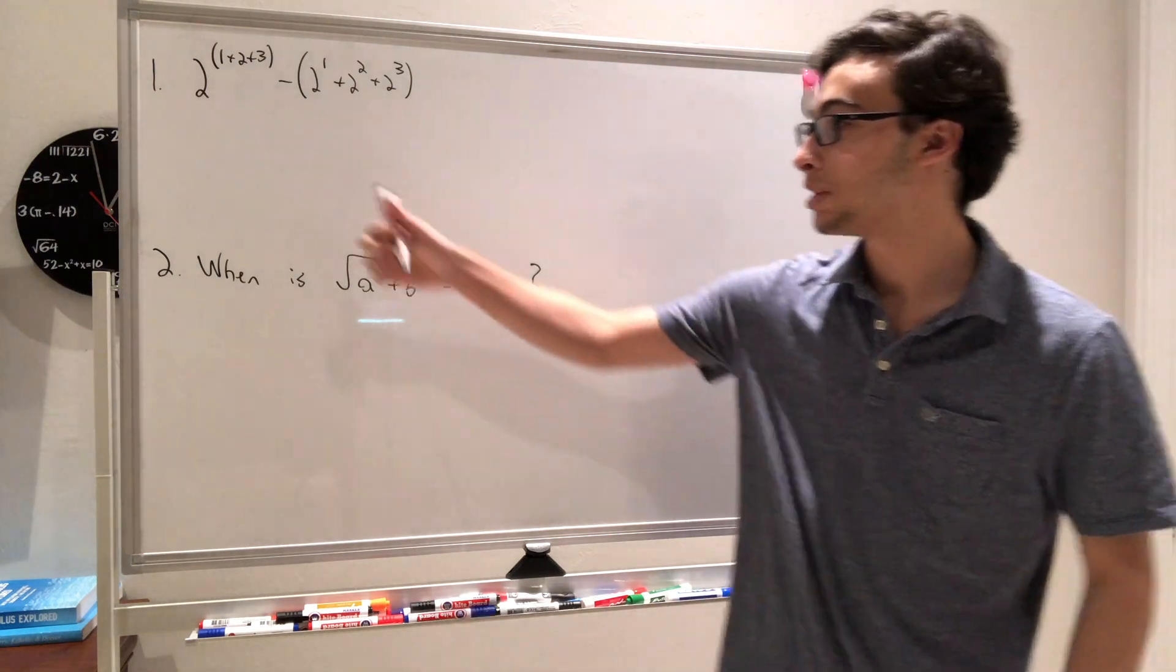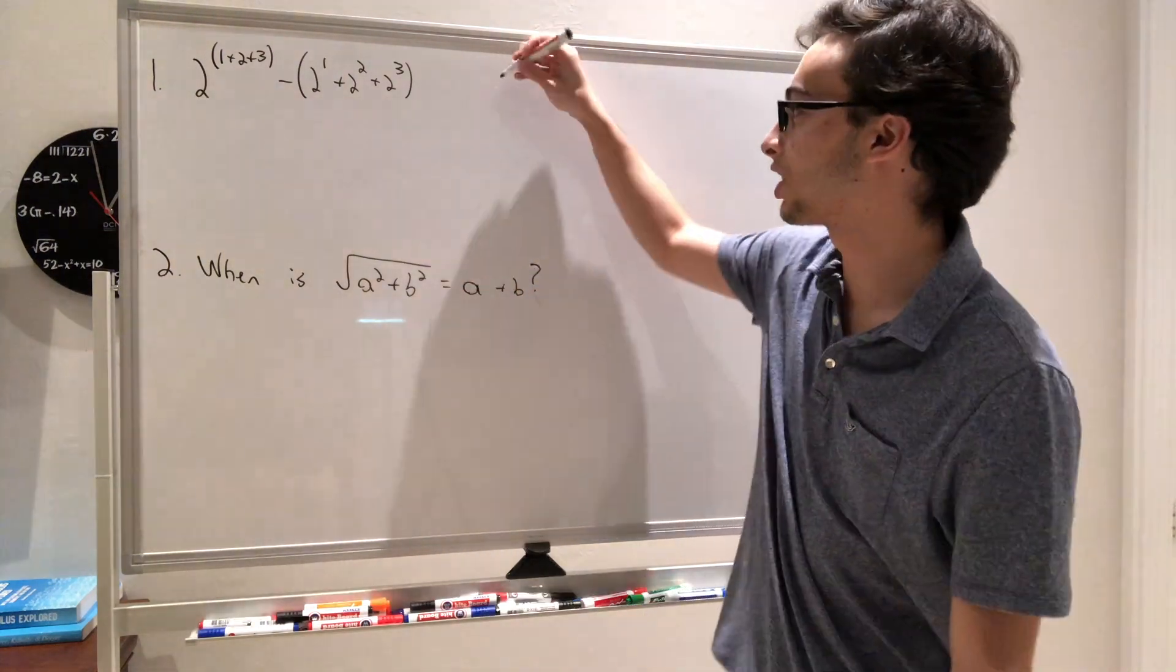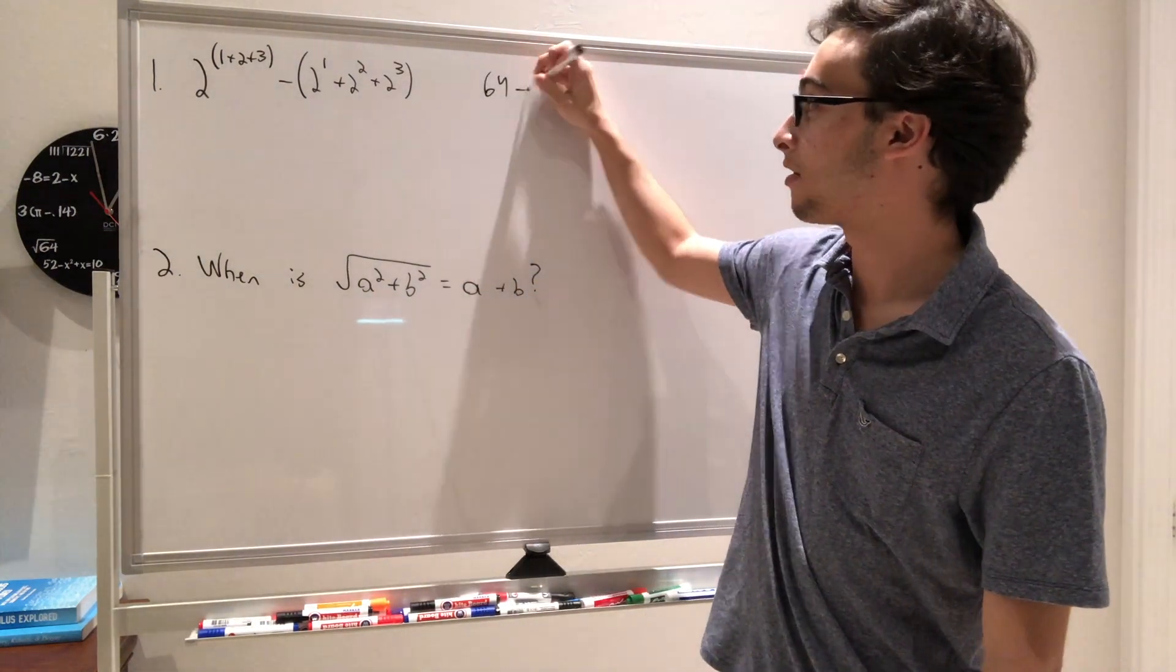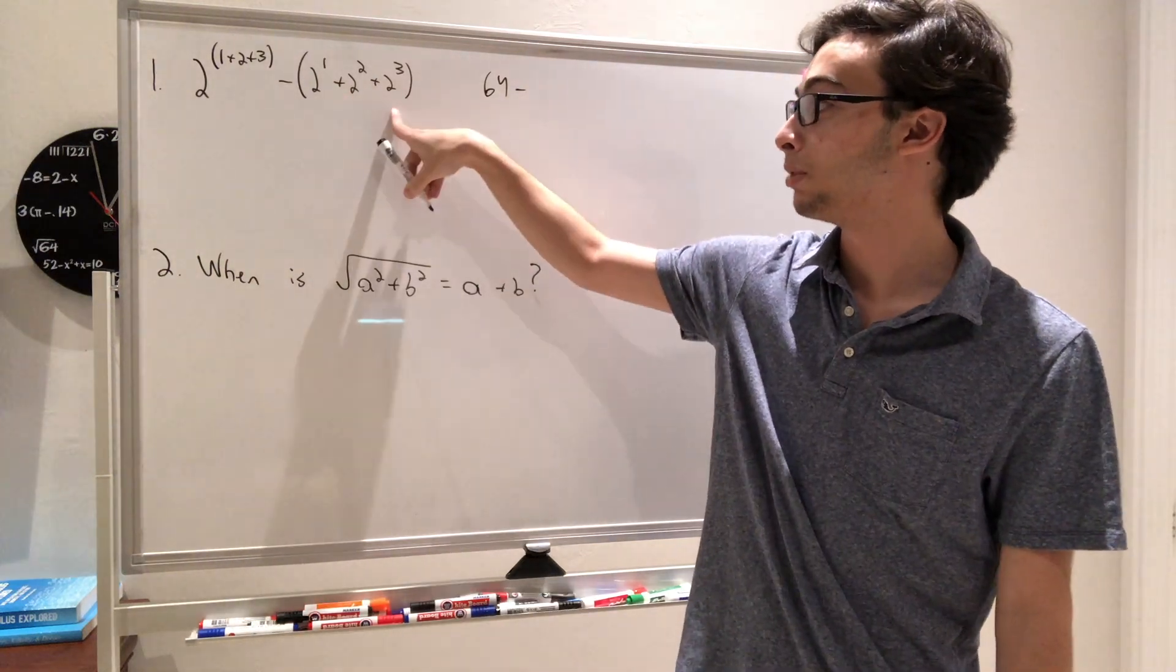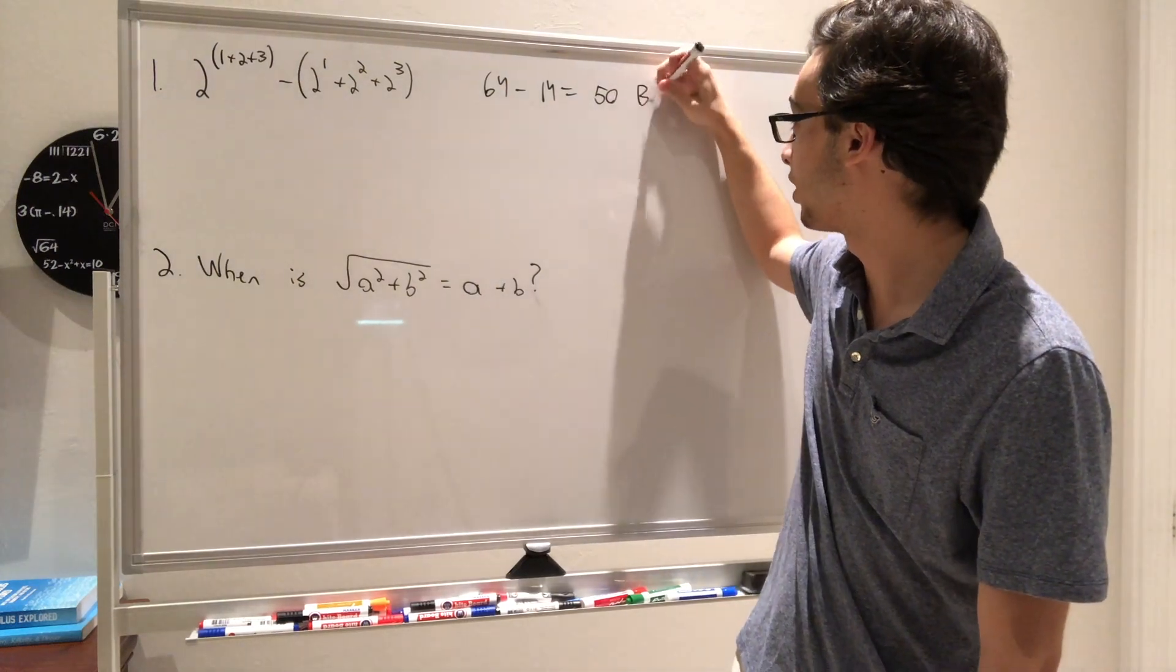Starting with problem number 1, we have 2 to the 6th minus 2 to the 1st plus 2 to the 2nd plus 2 to the 3rd. Now 2 to the 6th is going to be 64, and then we're going to have minus 2 to the 1st plus 2 cubed is 10 plus 2 squared is 14, so minus 14 gives us 50, which the answer is B, and we're done.